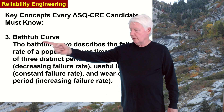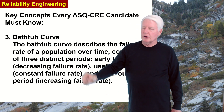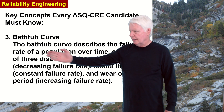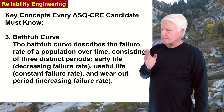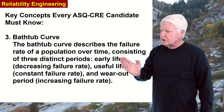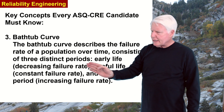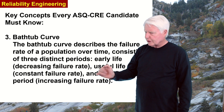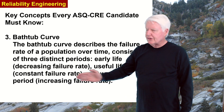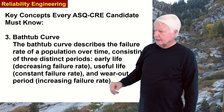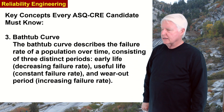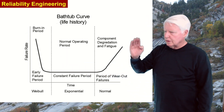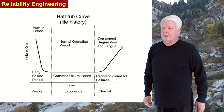The third fundamental concept is the bathtub curve, very fundamental to a CRE. The bathtub curve describes the failure rate of a population over time, consisting of three distinct periods: early life, which has a decreasing failure rate; useful life, with a constant failure rate; and the wear-out period, with an increasing failure rate. You can see why it's called the bathtub curve — it looks like the cross-section of a bathtub.